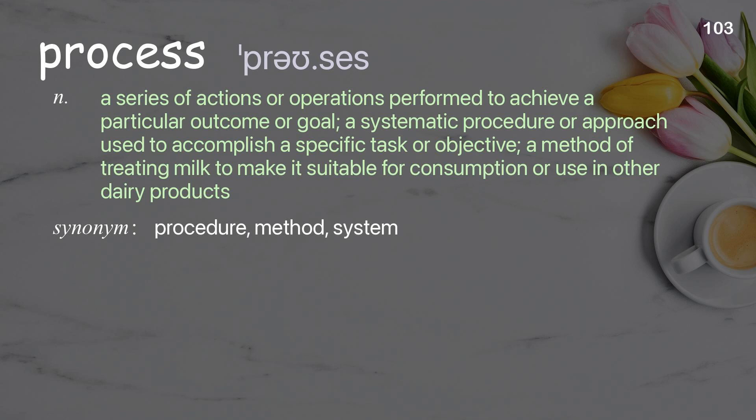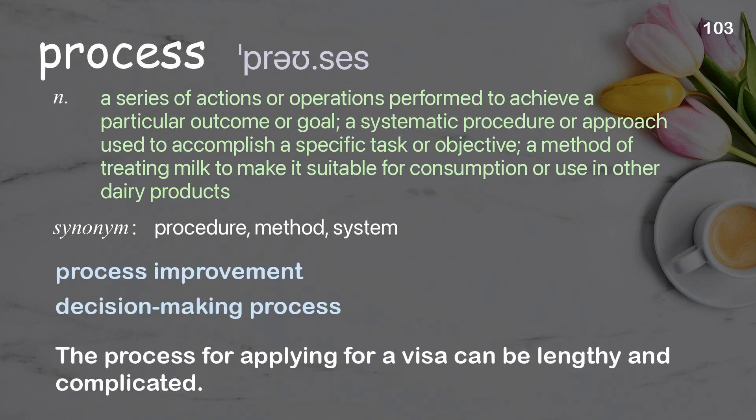Process: a series of actions or operations performed to achieve a particular outcome or goal; a systematic procedure or approach used to accomplish a specific task or objective. Examples: the process for applying for a visa can be lengthy and complicated.